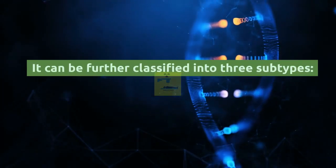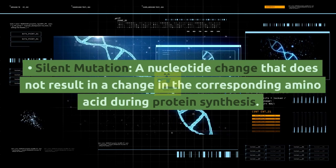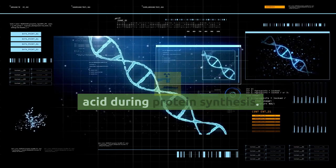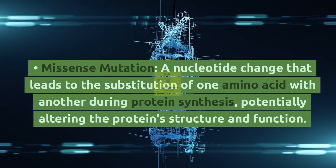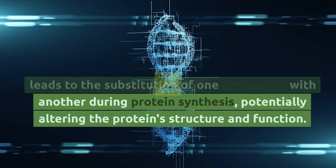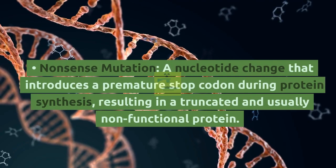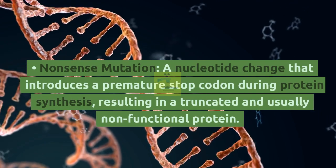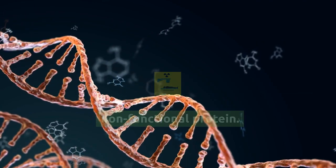Point mutations can be further classified into three subtypes. A silent mutation is a nucleotide change that does not result in a change in the corresponding amino acid during protein synthesis. A missense mutation is a nucleotide change that leads to the substitution of one amino acid with another during protein synthesis, potentially altering the protein structure and function. A nonsense mutation is a nucleotide change that introduces a premature stop codon during protein synthesis, resulting in a truncated and usually non-functional protein.